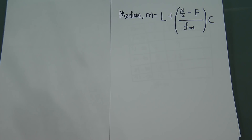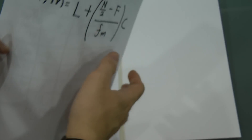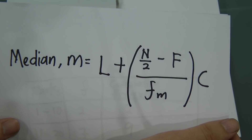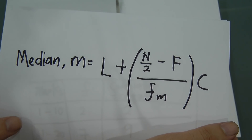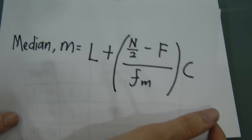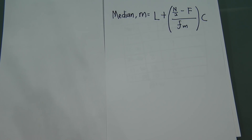Since a lot of students are very confused about the median formula in the statistics chapter, today I'm going to explain what this formula is. I'll explain what L is, what N is, what F is, and what Fm and C are. Before that, let me briefly tell you what the meaning of median is.